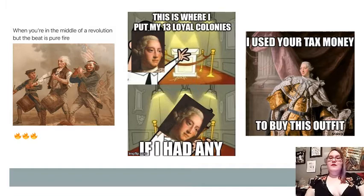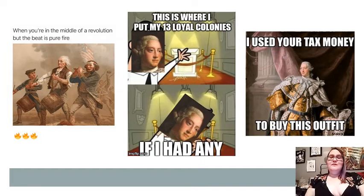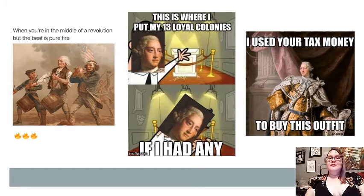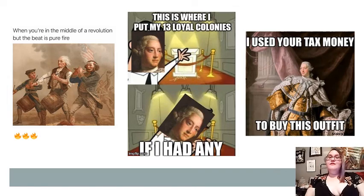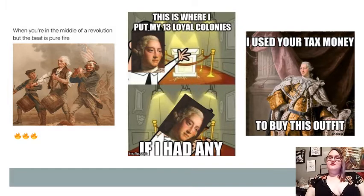We were mid-revolution, and we declared independence, and we knew that we needed a government, but honestly the only thing we really knew was what we didn't really want to do, which was become a tyrannical government like what we thought Britain was. So we went the entire opposite direction, and we created a federal government that had very, very little power. The Articles couldn't do much of anything.